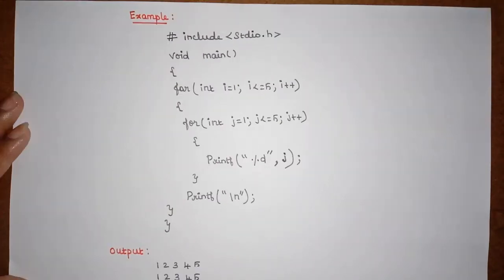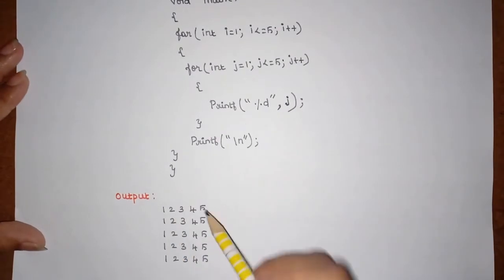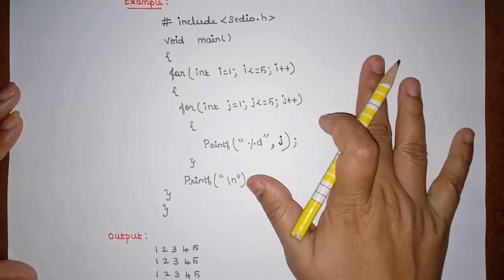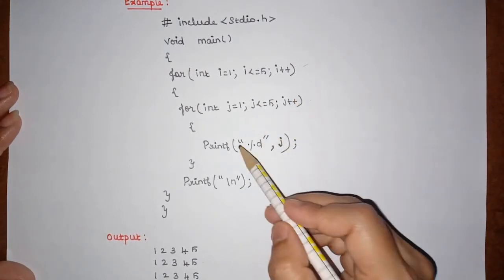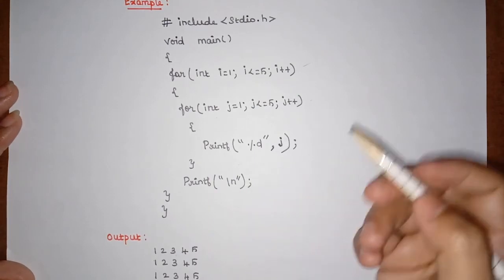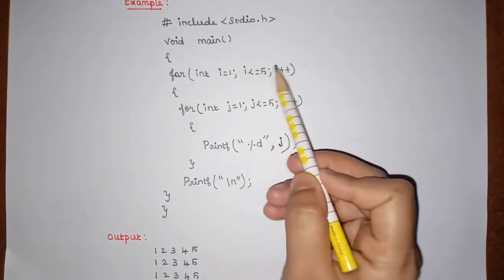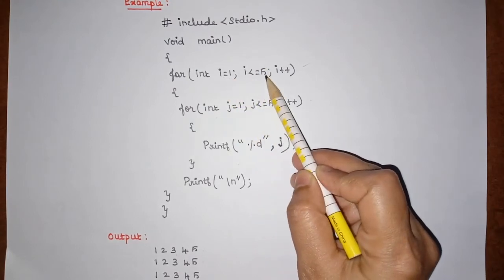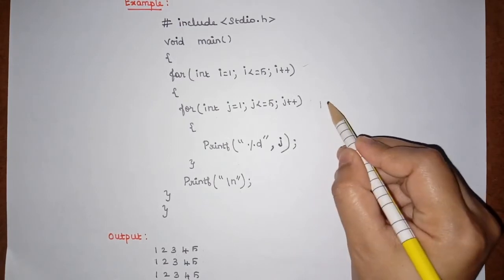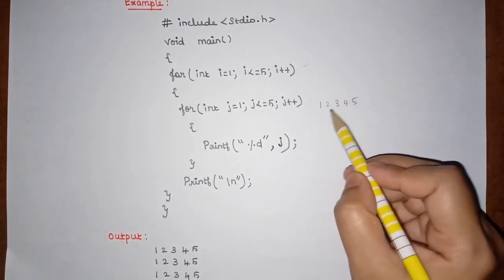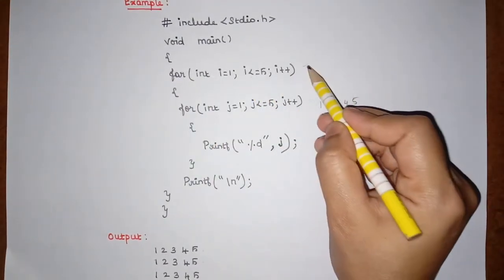Now let's look at the example for a nested for loop. In this example we are going to print output 1, 2, 3, 4, 5 for five times. The program has an outer for loop and an inner for loop. Inside the inner for loop there is one print statement, and for the outer for loop there is one more print statement. Our task is to print values from 1 to 5.